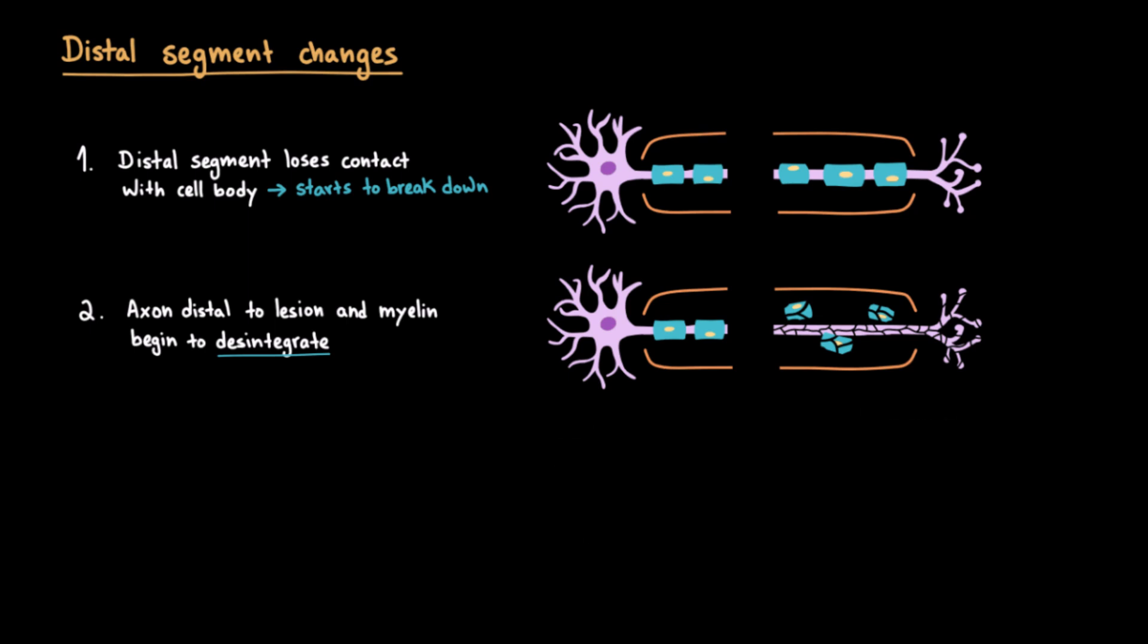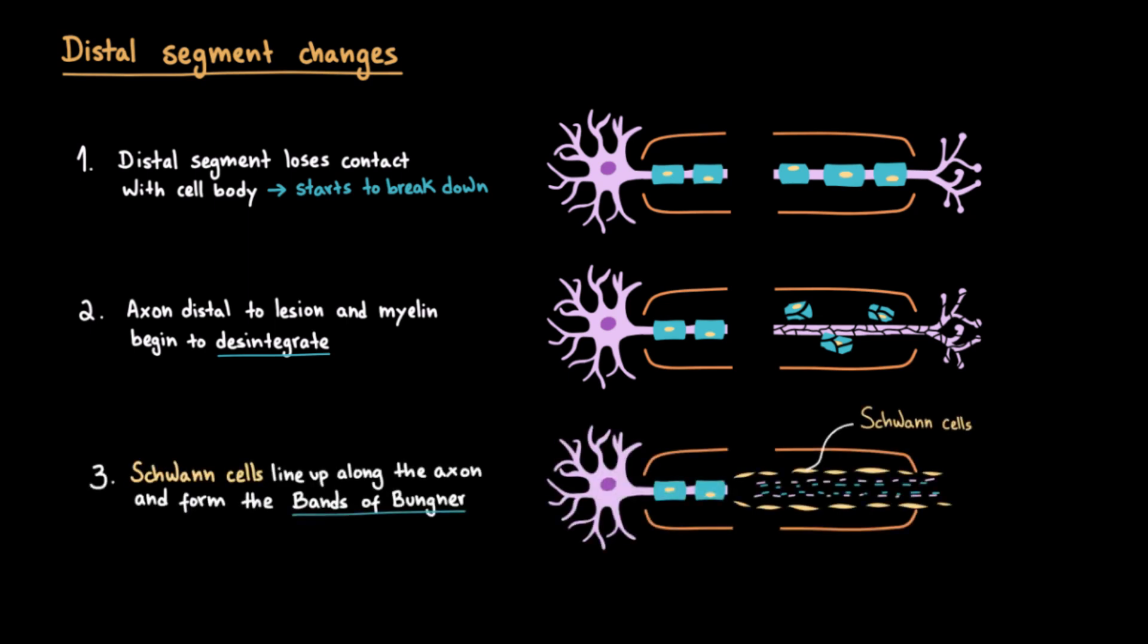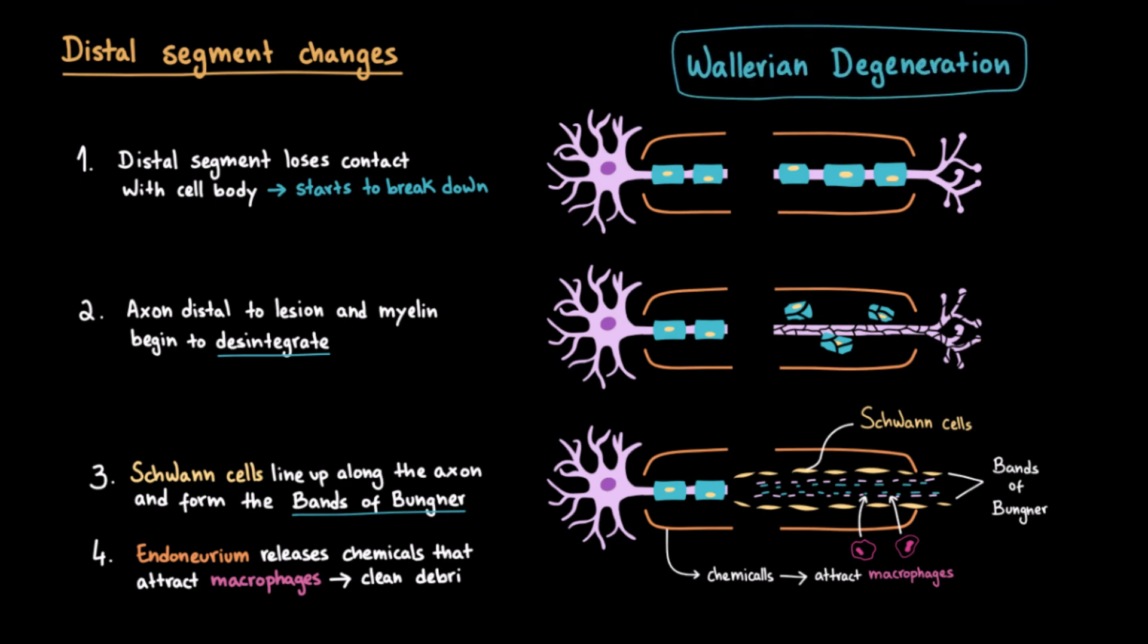But the Schwann cells don't just sit still. They line up along the path of the old axon, forming what's called the bands of Böngner. You can think of these like guiding tunnels for regrowing axons. At the same time, the endoneurium releases chemical signals that attract macrophages, which move in and clear away the debris of axons and myelin. Together, the changes in both the proximal and distal segments are called Wallerian degeneration.